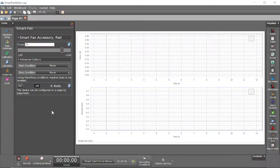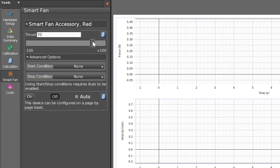Here we're seeing the Capstone control panel. Thrust can be set with the slider bar, or you can just type in a positive or negative value.